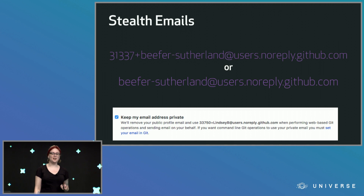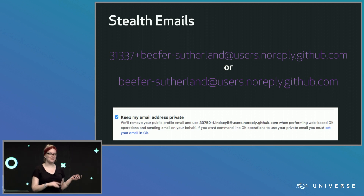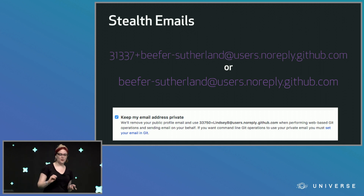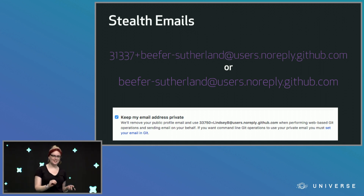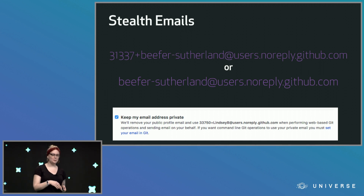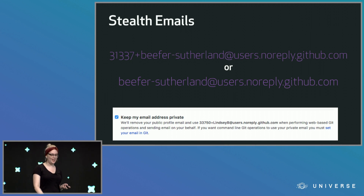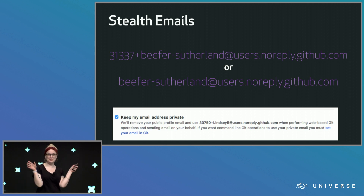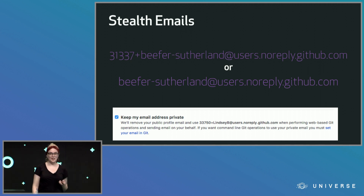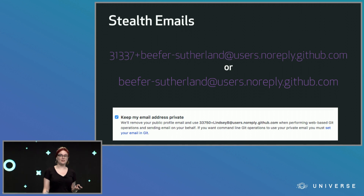We have two examples of this email: an ID plus your username at users.noreply.github.com, or just the username. The first one is new — if you have the second one without the number and you change your username, the history won't connect back to you. But if you use the first one, you can change your username and all that Git history still sticks with your account — kind of solving the deadnaming problem, not exactly, but a little bit. If you're using that stealth email, you'll keep all those commits and your contribution graph will stay the same.